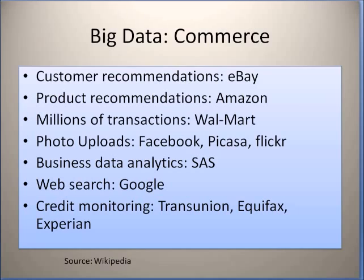Facebook and other web services manage thousands if not millions of photographs and also perform statistical analysis on these images. SaaS is a business intelligence company that works on using business data for prediction of the future performance of different companies in the market. Google uses statistical techniques for finding relevant search results. Finally, credit monitoring agencies such as TransUnion, Equifax, and Experian use a variety of statistical methods for assigning credit scores to individuals.